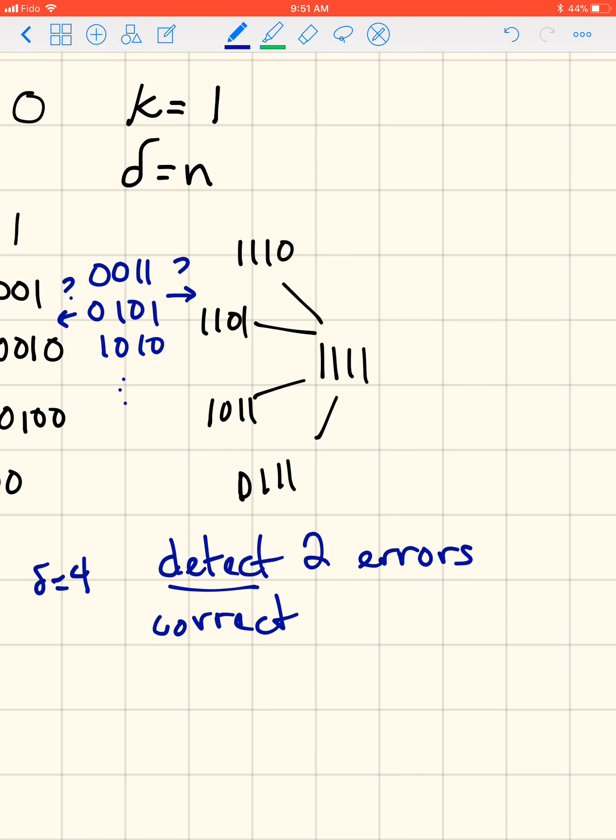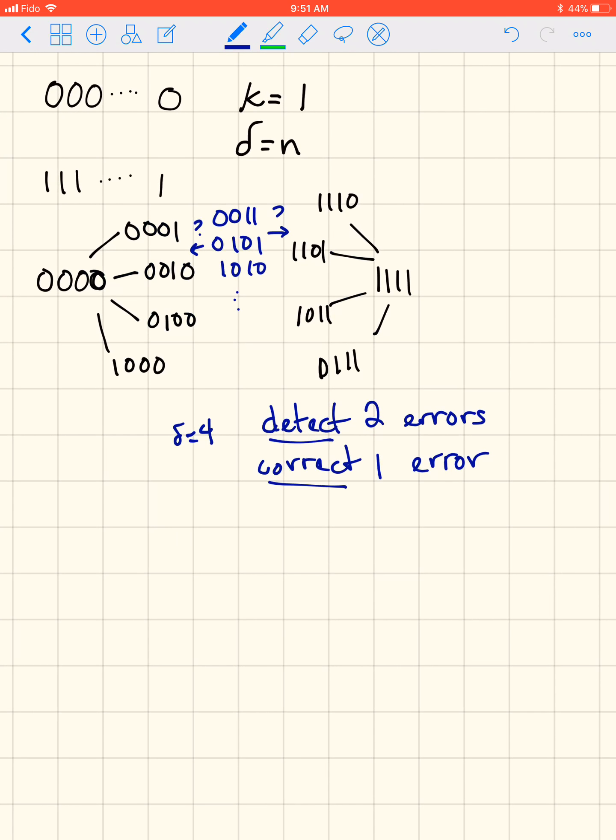So that's the difference between detection and correcting. We can detect usually more than we can correct, because we don't always know how to correct them unless our code allows us to do that, which is what we want. So that leads us nicely into question 2.